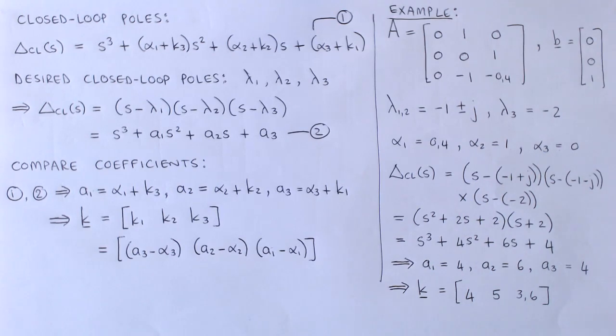We will later use this fact to conclude that for any system that is controllable, whether it is written in control-canonical form or not, we can place the closed-loop poles in any desired locations.